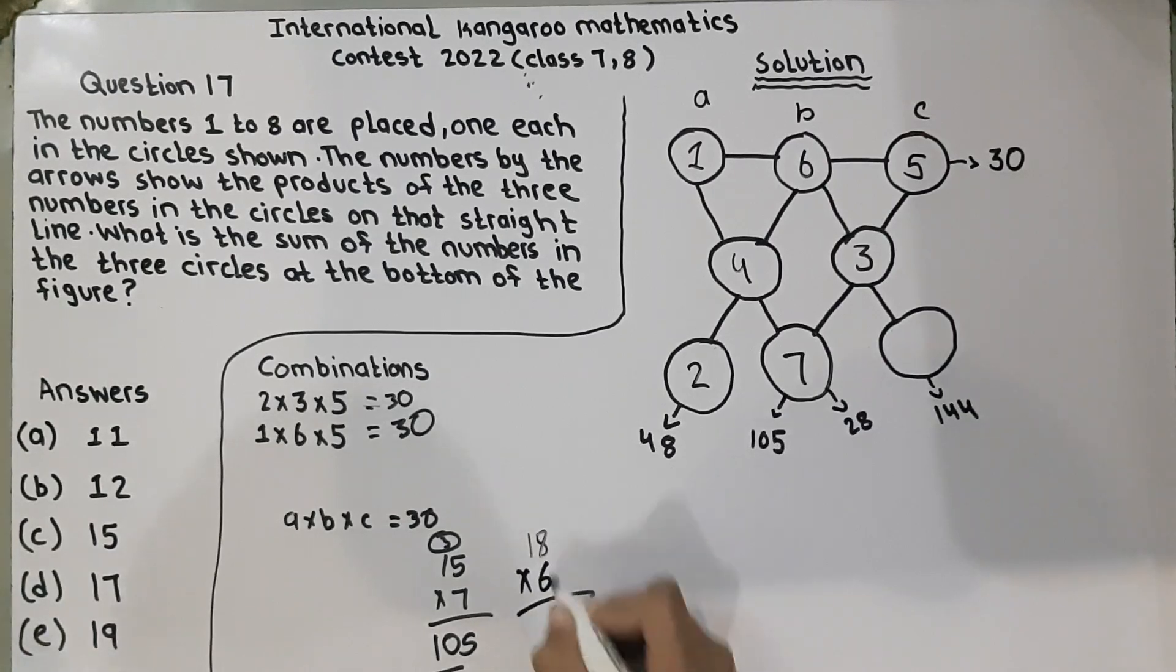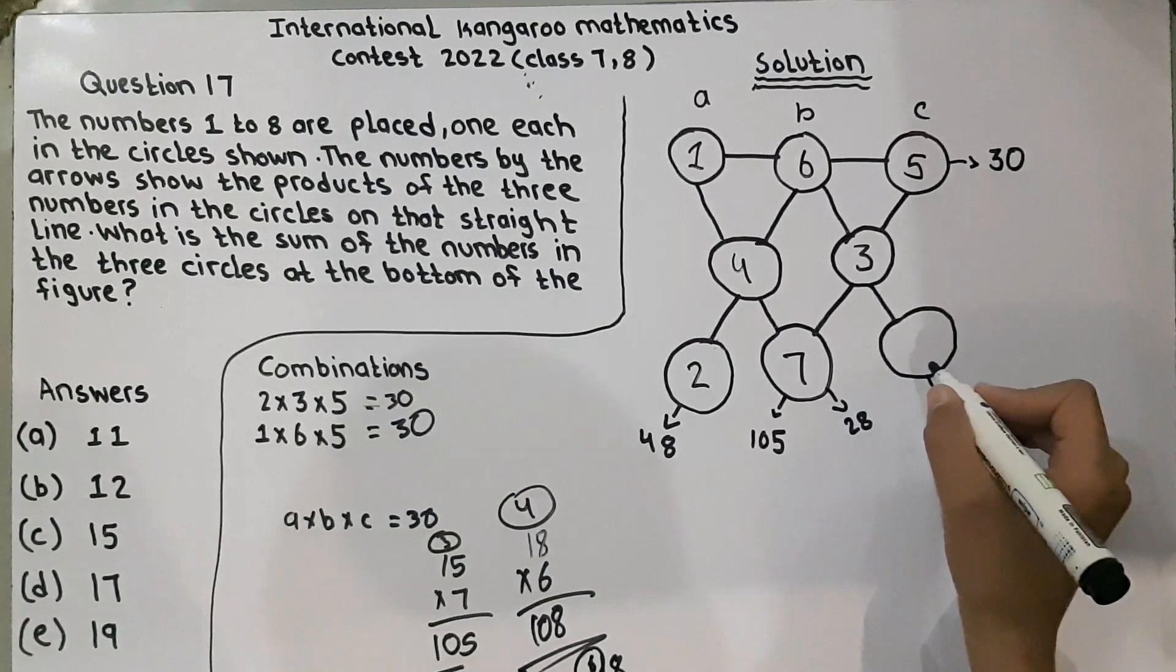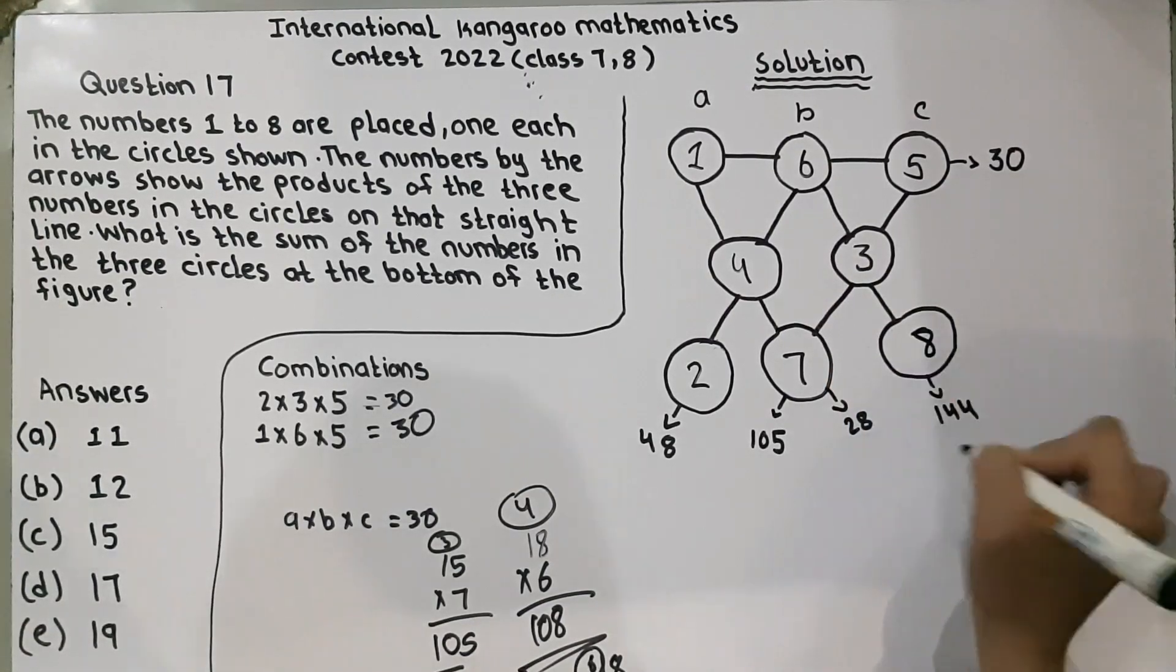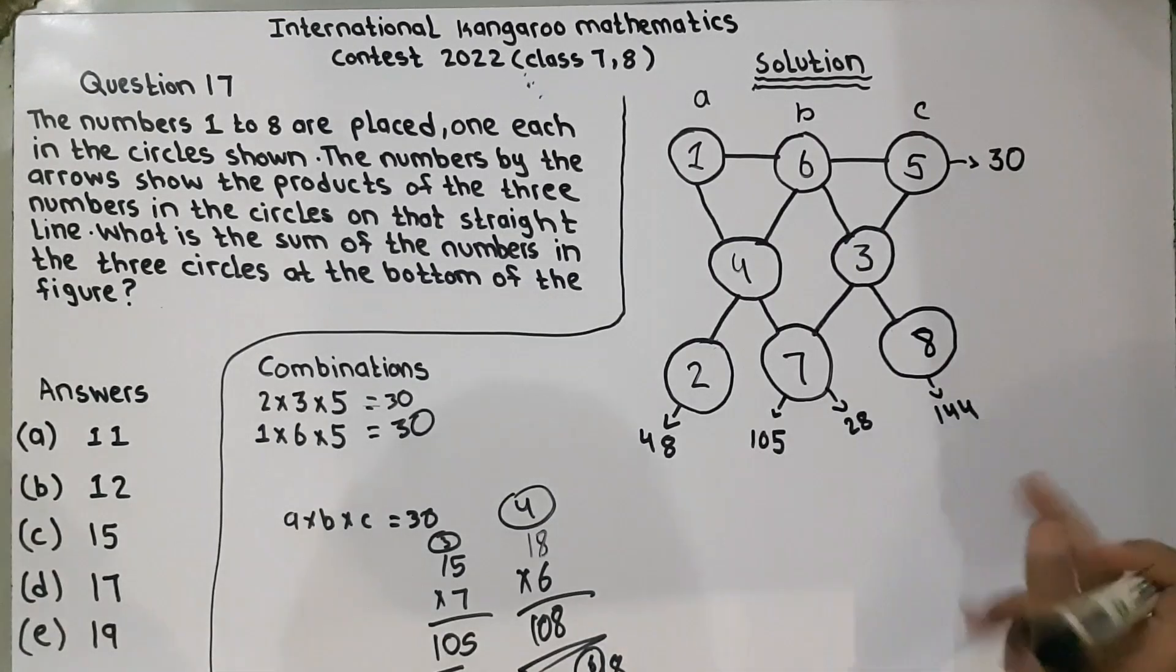6 times 8 is 48. 6 times 1 is 6, no. Let's check 18 times 8. 8 times 8 is 64, 144. Oh, 144. 18 times 8 is 144. So, we have solved this.